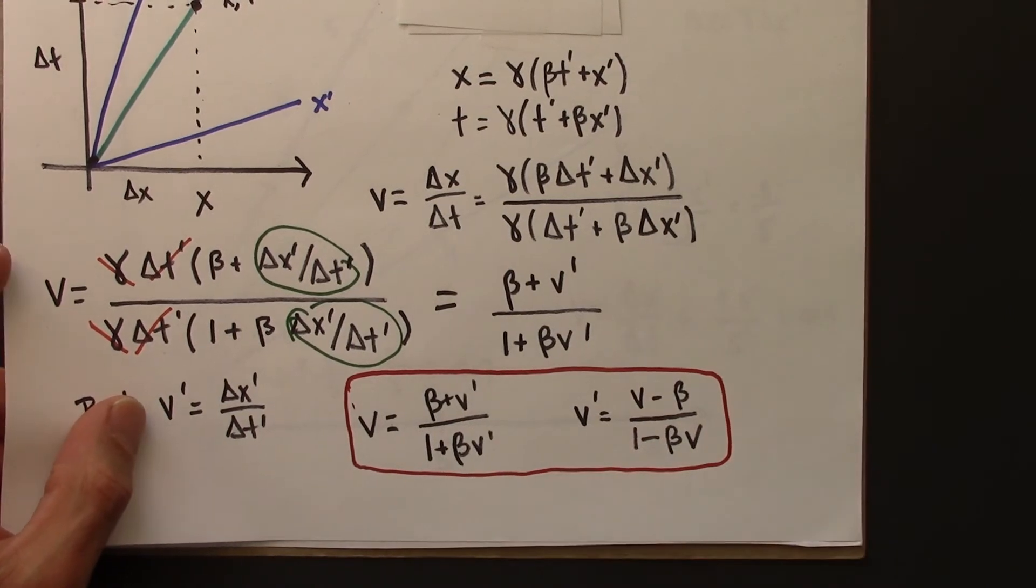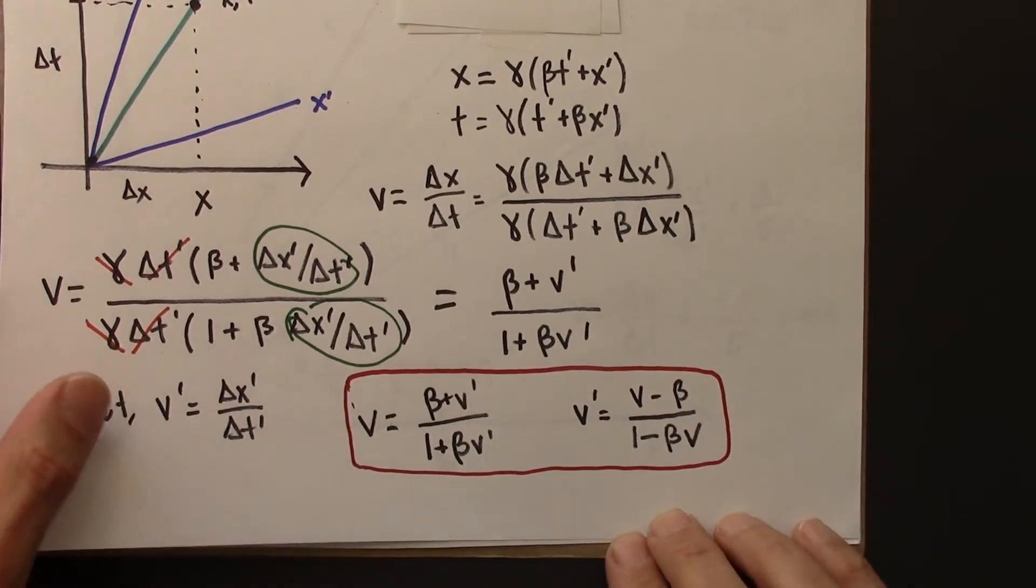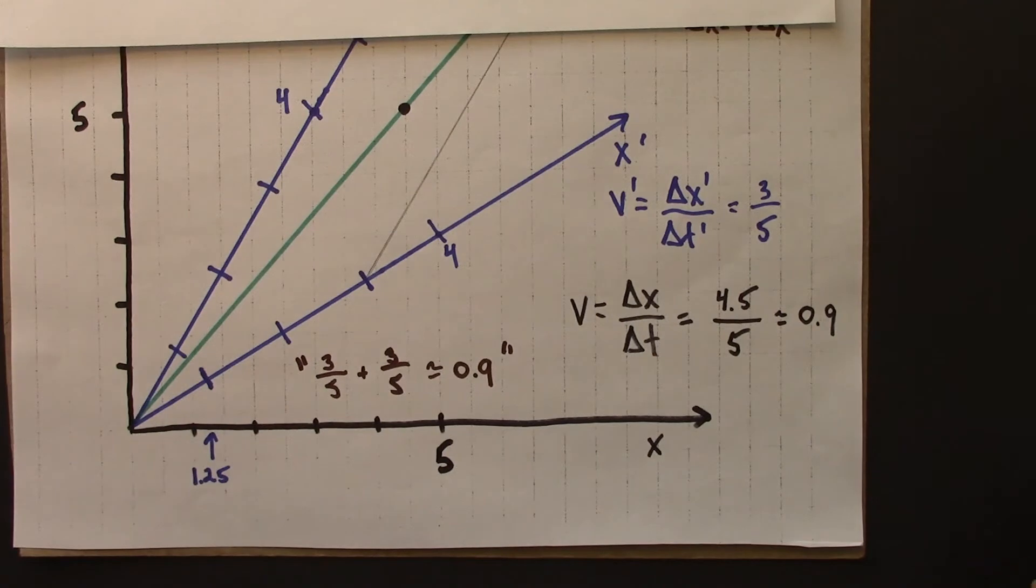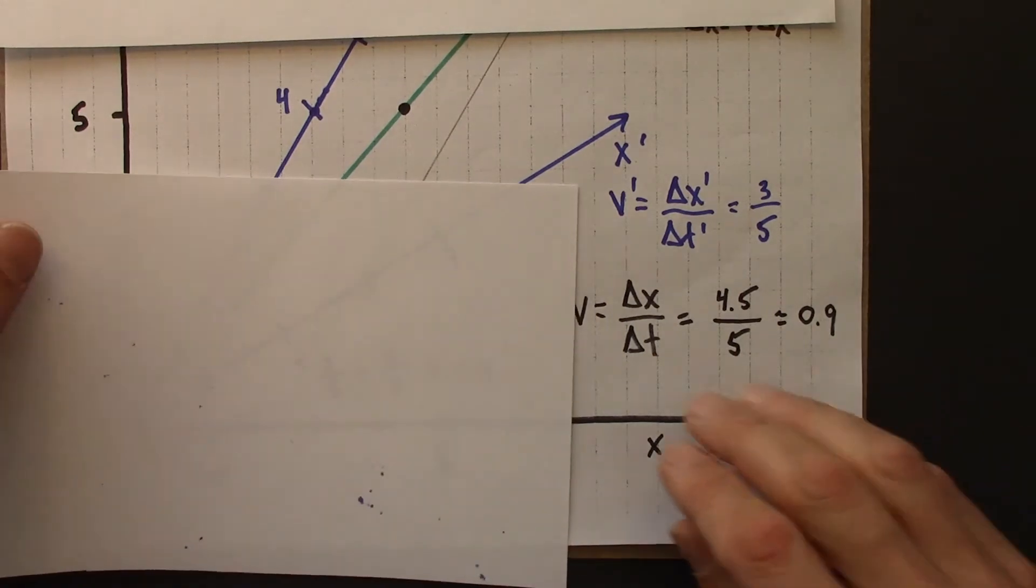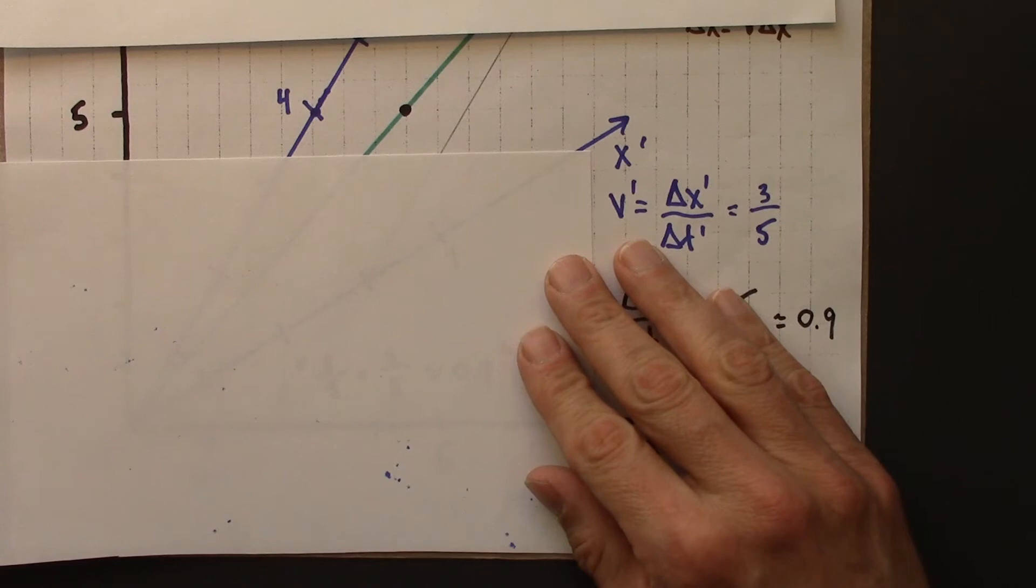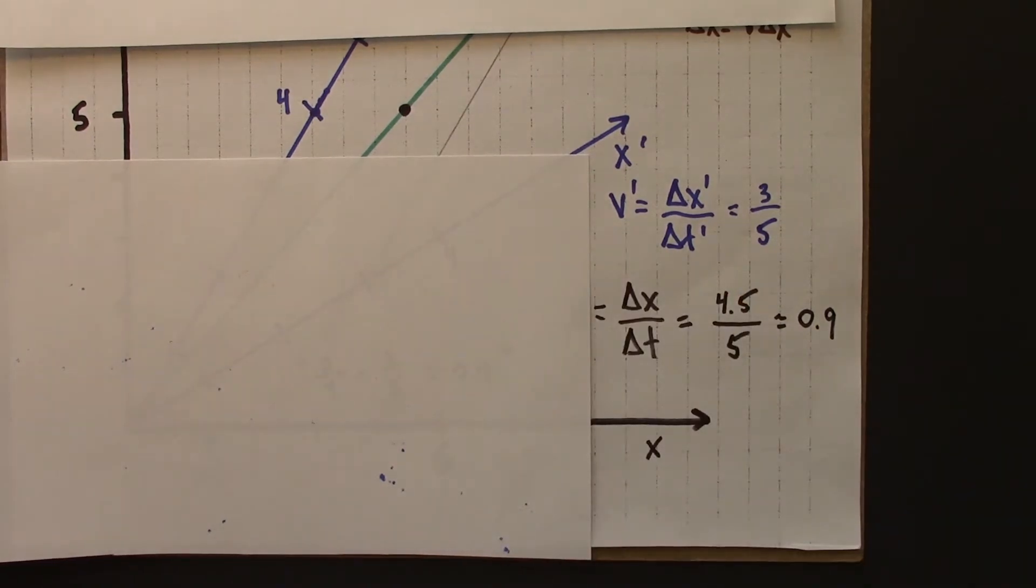So we've got these velocity transformation equations. Let's try them out. And let's try them out on the example we just did graphically. So that's this over here. So I'll do the work here.